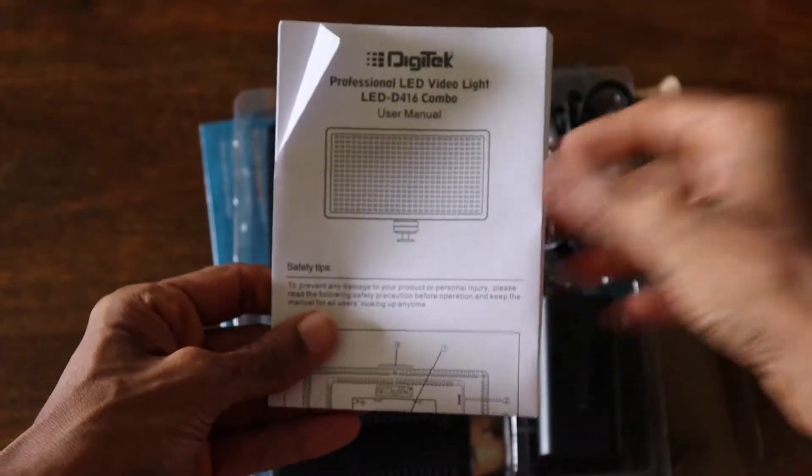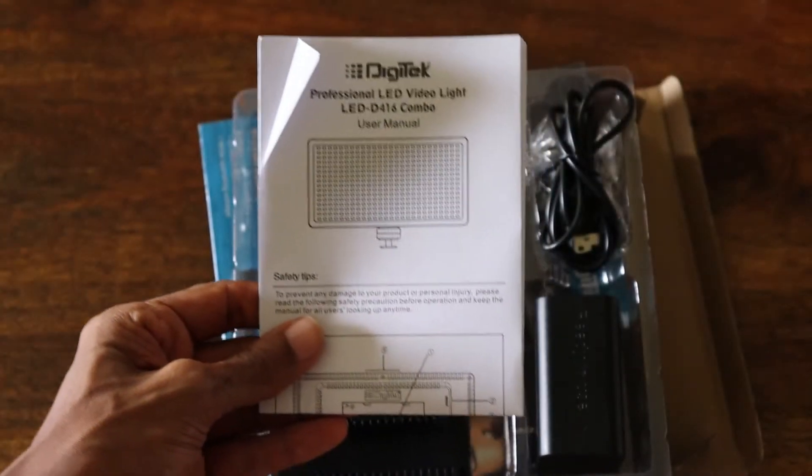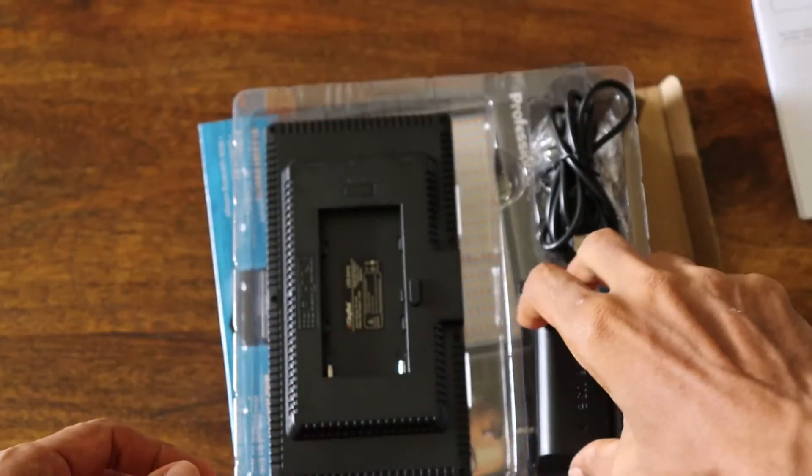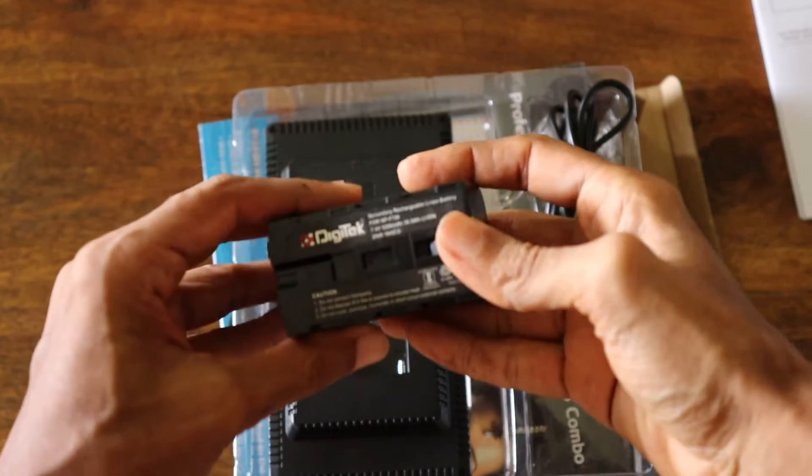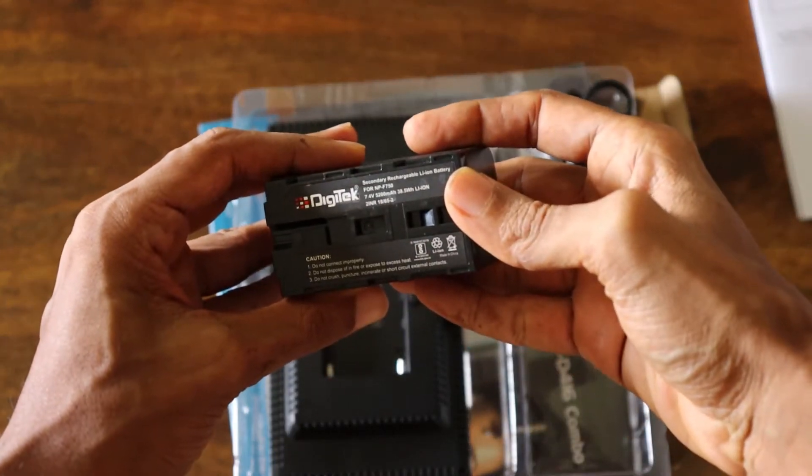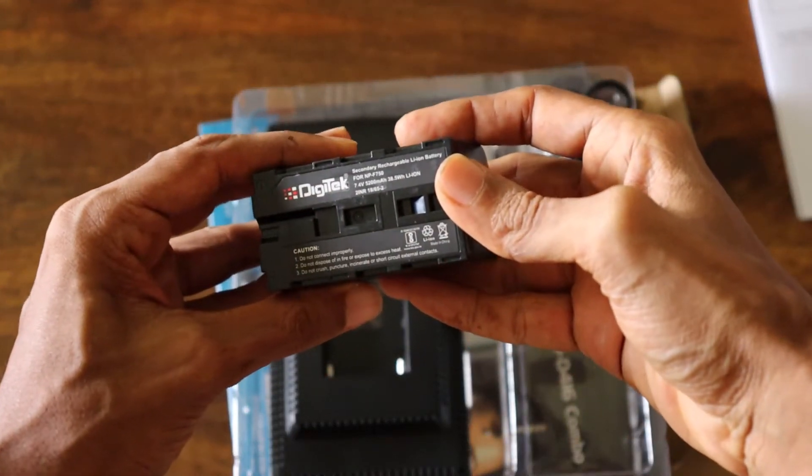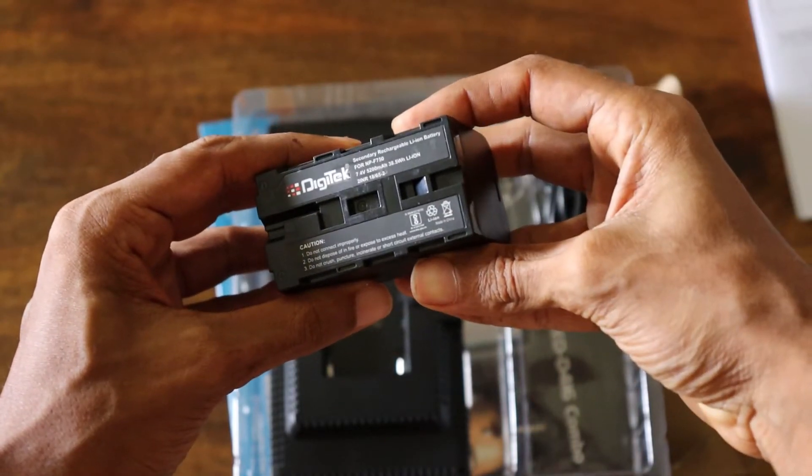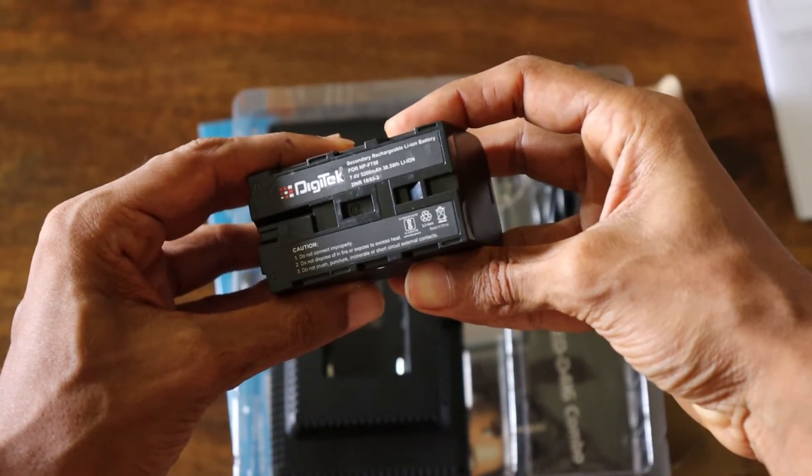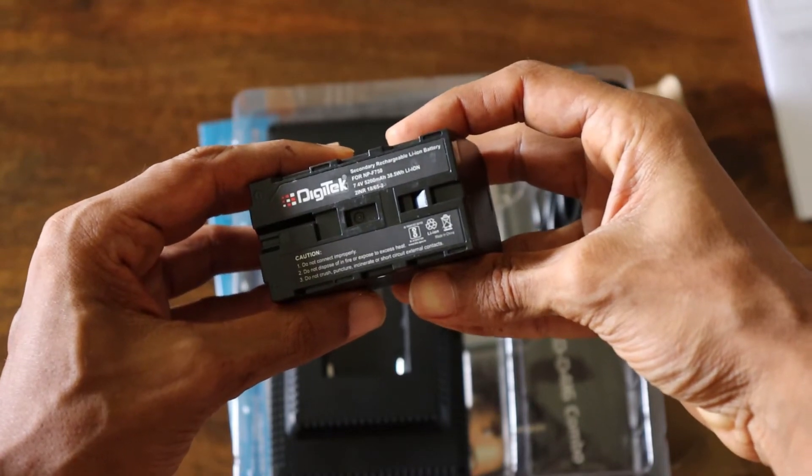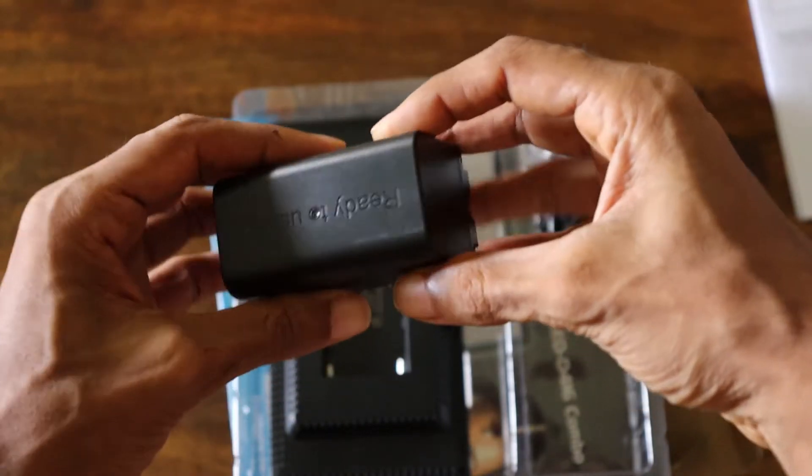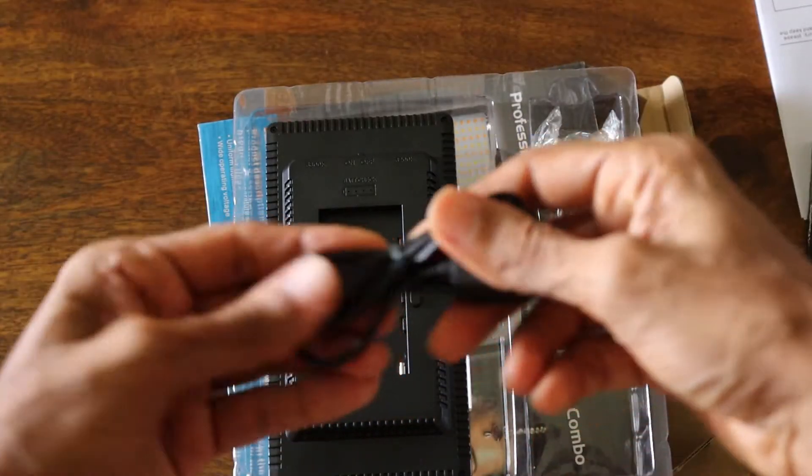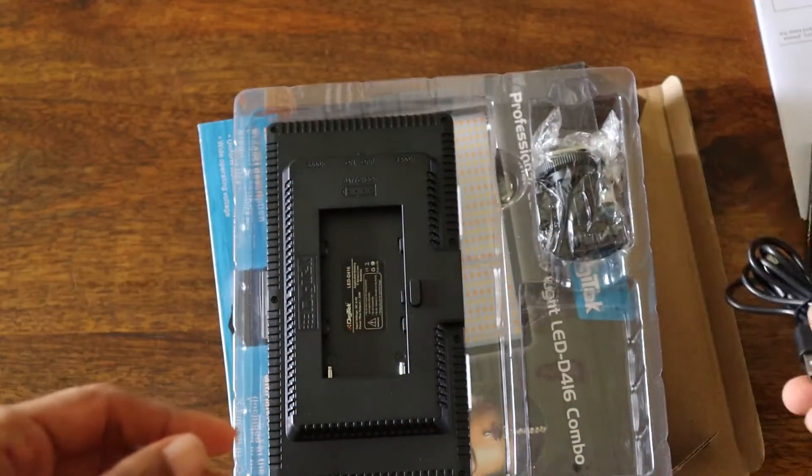Instruction manual. A battery. This is a NP-F750, 38 Wh lithium ion, 7.4 volts. A charging cable.